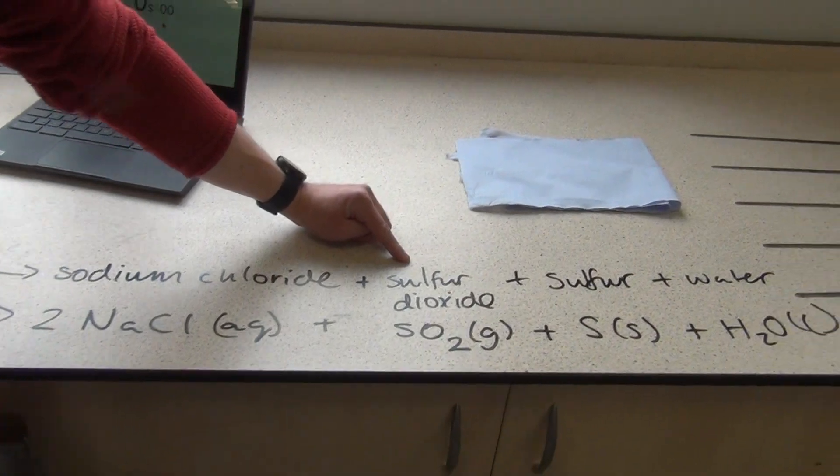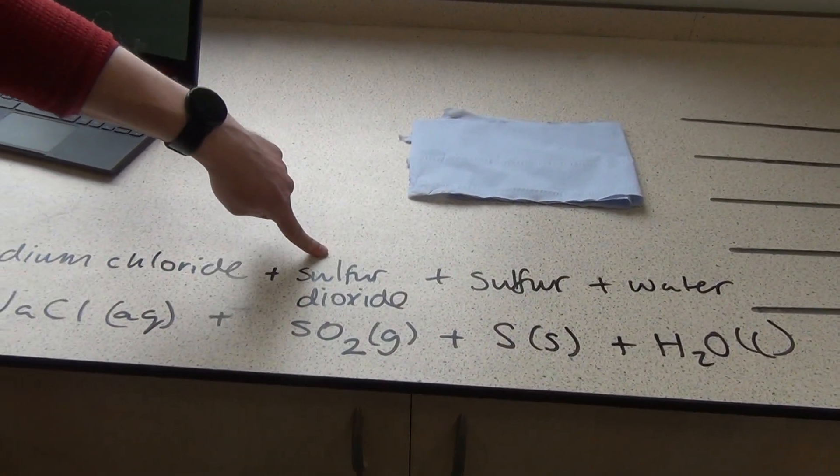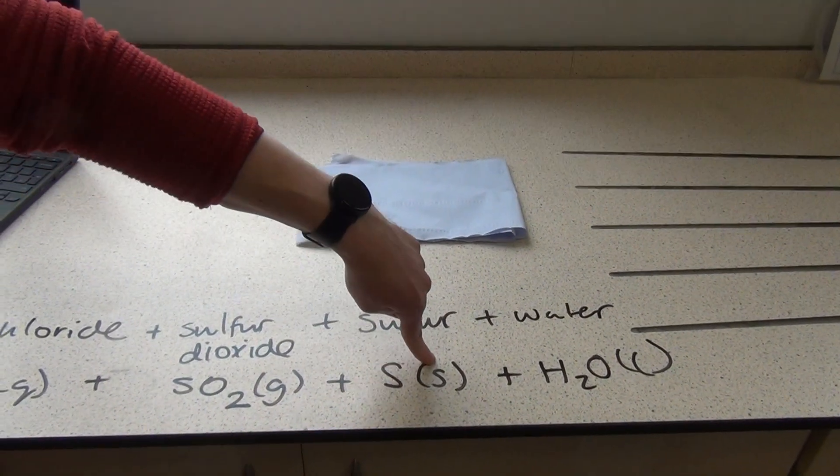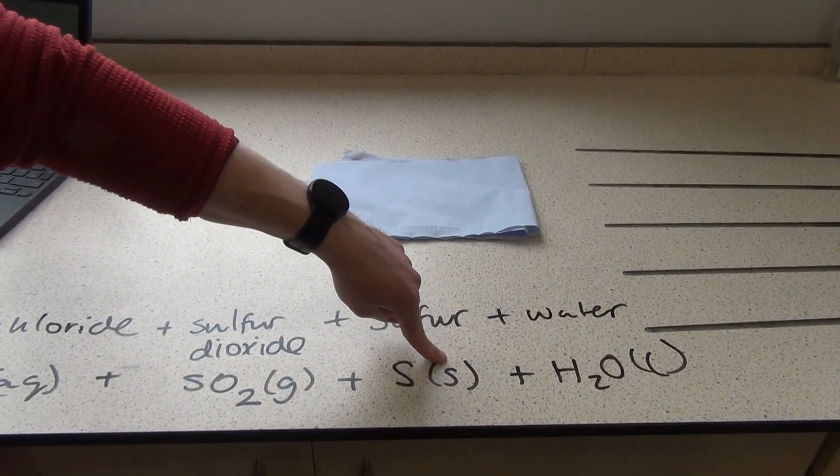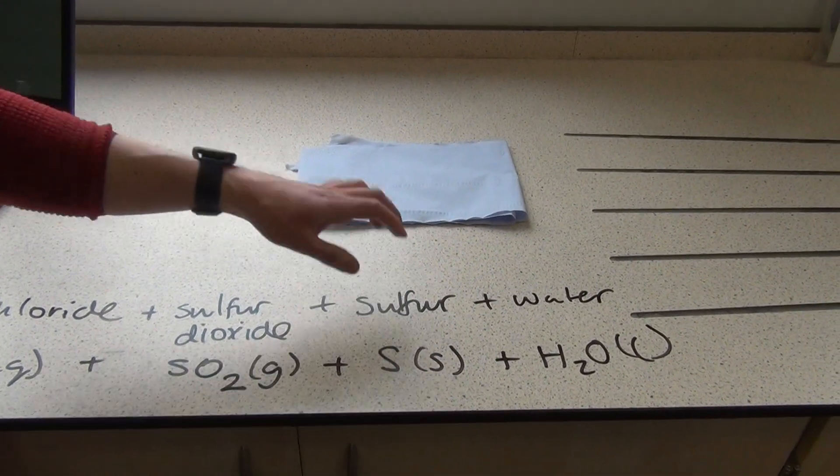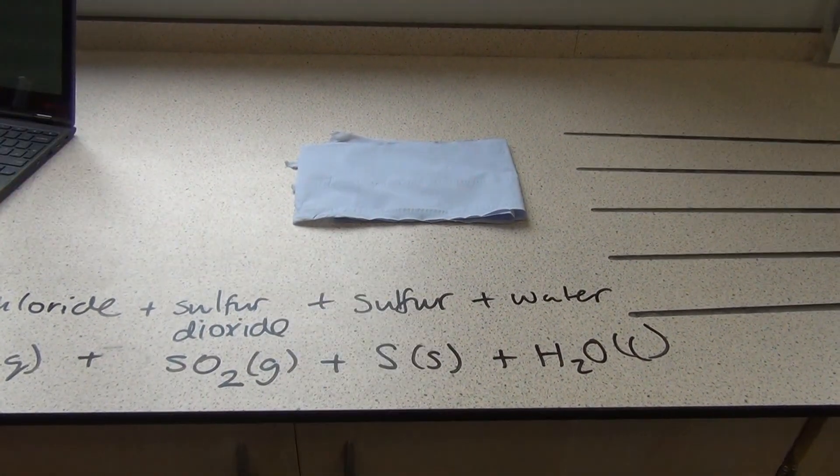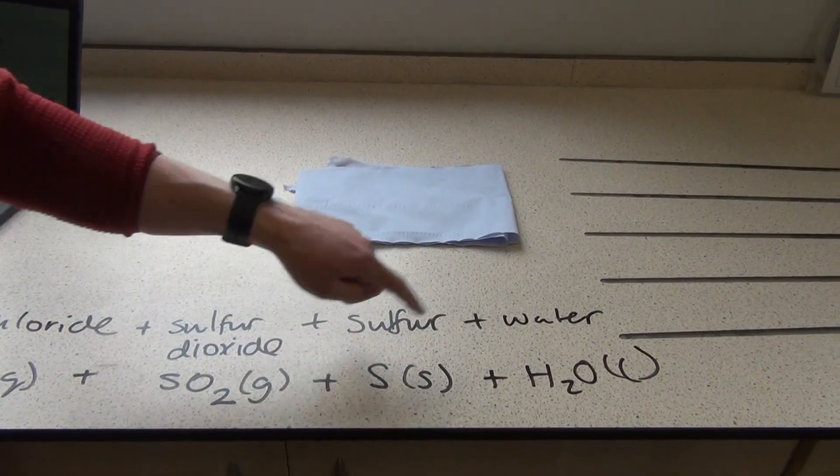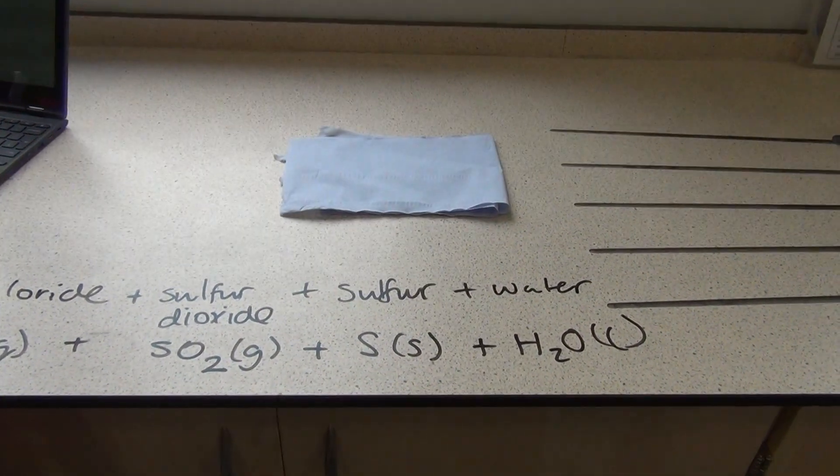The second product it's going to form is sulfur dioxide, that's a gas that smells like farts. Then we've got sulfur as a product, and you can see there's this little S here. That S means the sulfur is a solid, and because this reaction forms a solid product, we can say that's a precipitate. So we're going to get a precipitate of solid sulfur, and then our final product here is water.